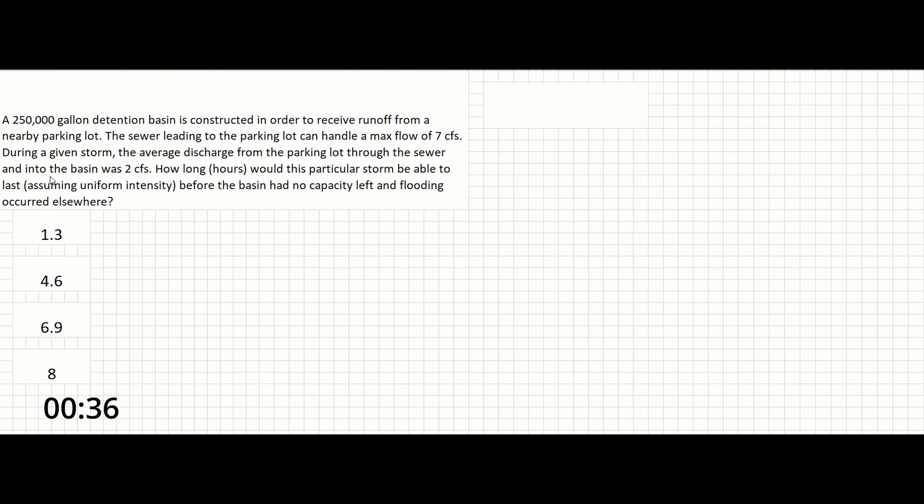So this problem is a basic unit conversion problem. And all we need to do is use the information that it's given us, as well as the understanding that Q equals volume over time. So we can prove that real quick just by looking at the units. So Q is cubic feet per second. Volume is cubic feet. Time is seconds. These match up. And all we have to do is rearrange this equation to find what the question is asking for, which is time. So T equals V over Q.